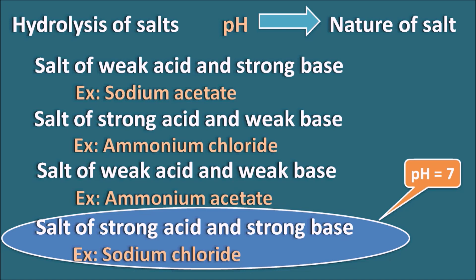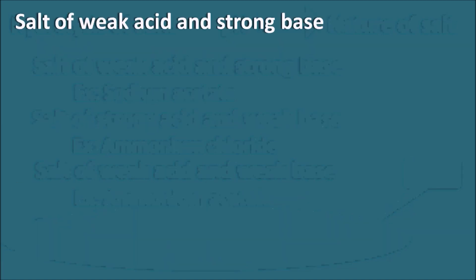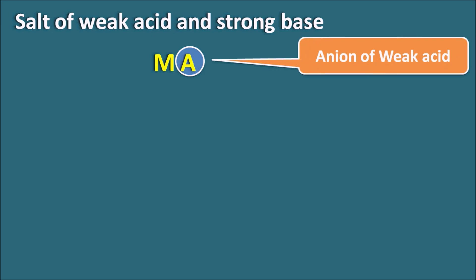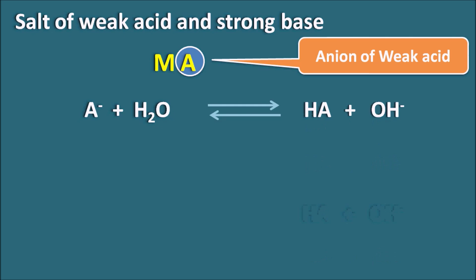Now let us see how we can calculate the pH of a salt solution for these three types of salts. Let us start with the salt of weak acid and strong base. We indicate the salt by MA, where A indicates the anionic portion — the anionic part of the weak acid. Since the salt is made up of a weak acid and strong base, the component from the strong base is completely hydrolyzed, but the component from the weak acid, A⁻, is not completely hydrolyzed. The anionic portion reacts with water, acting like a weak electrolyte, achieving equilibrium — A⁻ converting to HA plus OH⁻.